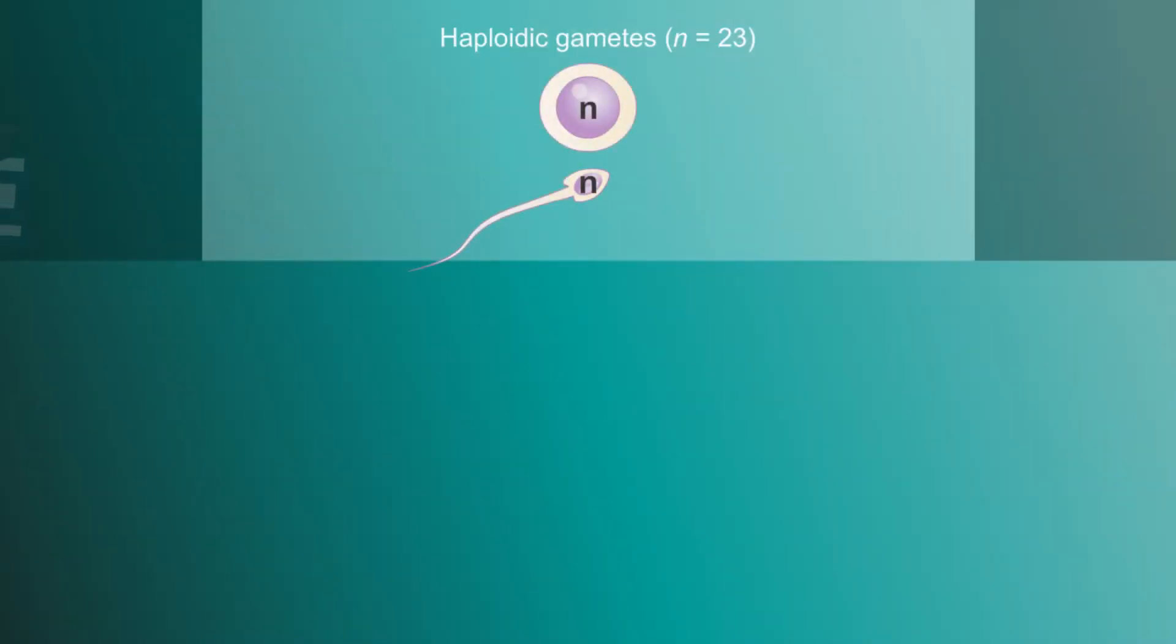Every human being comes from the union of two gametes, which are spermatozoon and ovum. The gametes formation is the first stage of human life cycle.